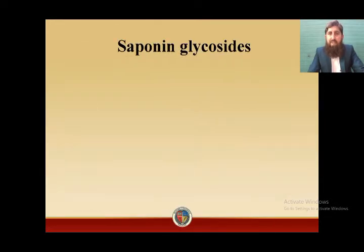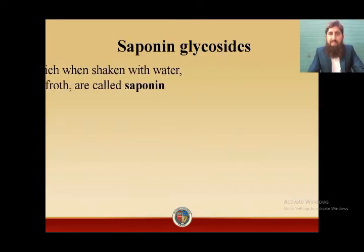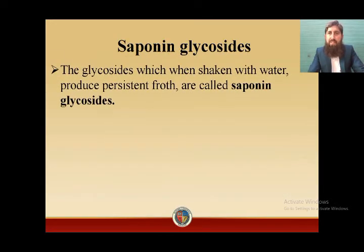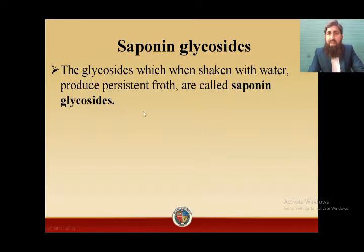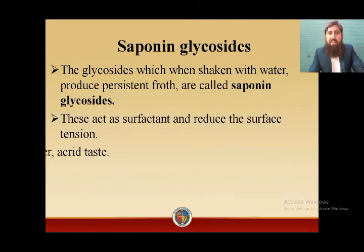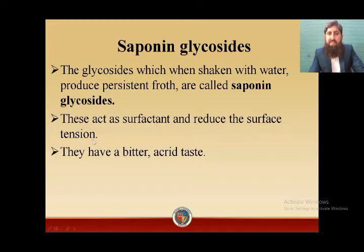First of all, we will define saponin glycosides. What are saponin glycosides and why are they named so? The glycosides which, when shaken with water, produce persistent froth are called saponin glycosides. They act as surfactants and reduce the surface tension.